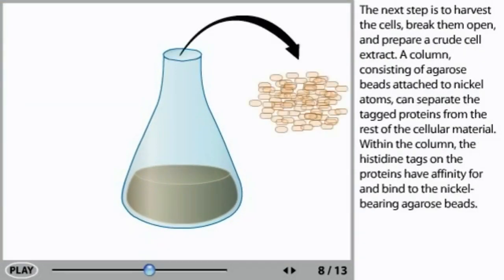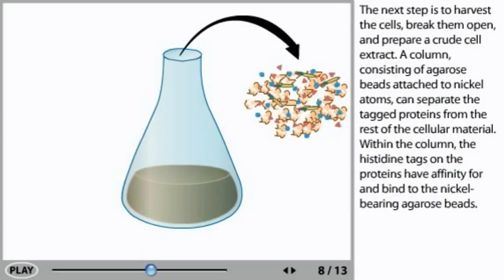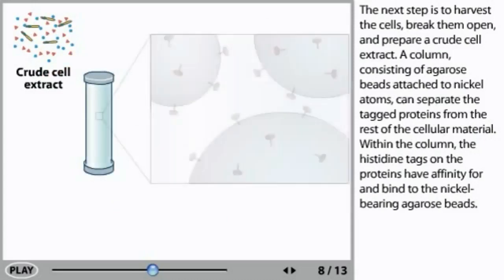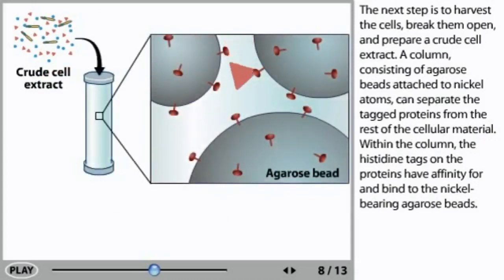The next step is to harvest the cells, break them open, and prepare a crude cell extract. A column consisting of agarose beads attached to nickel atoms can separate the tagged proteins from the rest of the cellular material.